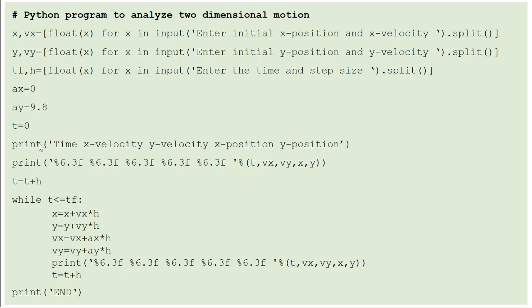Then I print the titles of the column: Time, x velocity, y velocity, x position, y position. The initial values are already available here. So I print them straight away. Then I go to next step by incrementing the time by step size h.